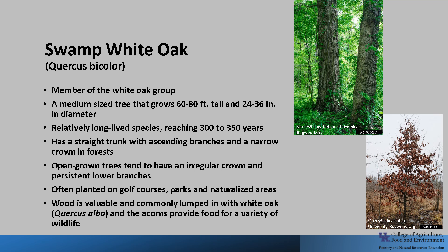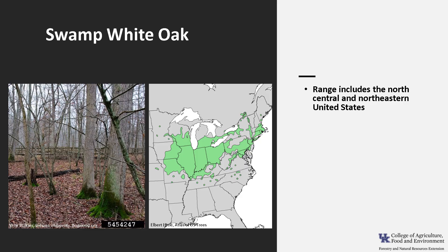The wood is valuable and commonly lumped in with White Oak Quercus alba wood, and the acorns provide food for a variety of wildlife. Swamp White Oak's range includes north central and northeastern United States, with scattered groups in Tennessee and North Carolina. It is scattered across Kentucky except in the eastern half of the state.